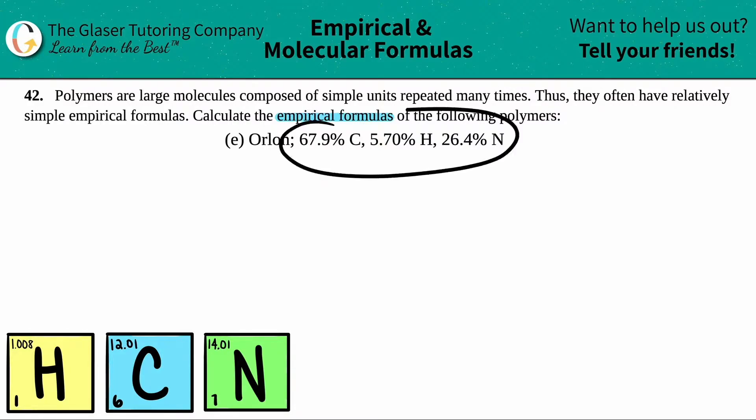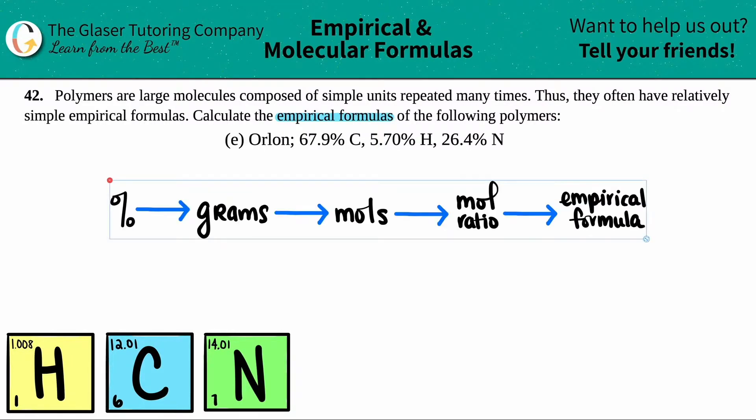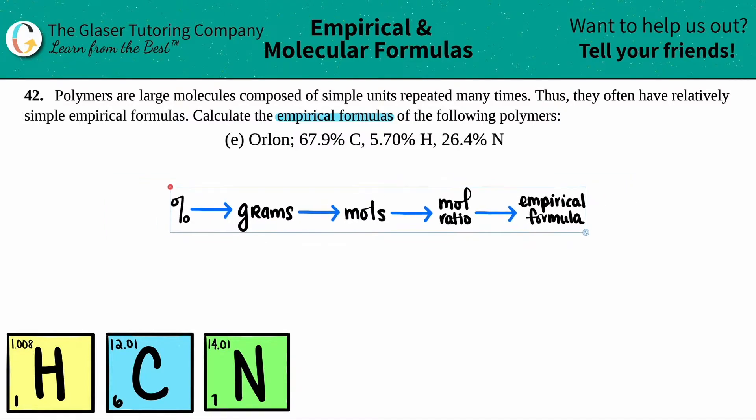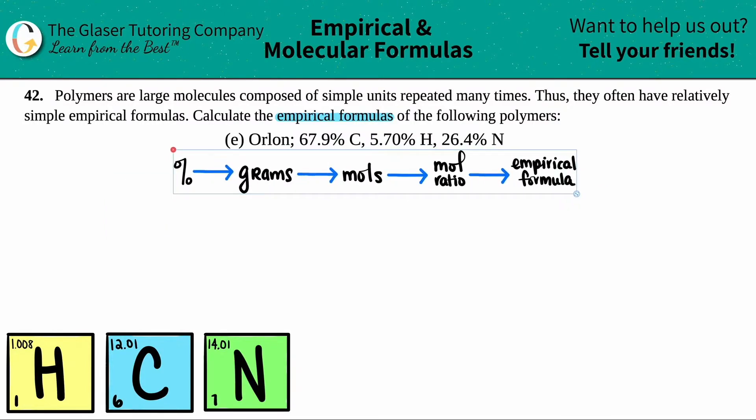But how do we go from a percentage to an empirical formula? Well, it's a four-step process. We've done tons of these problems already if you guys are on the playlist. But basically, we start from a percent and we end at the empirical formula.